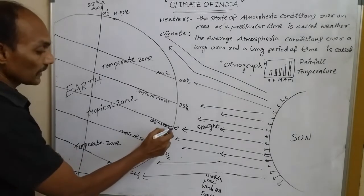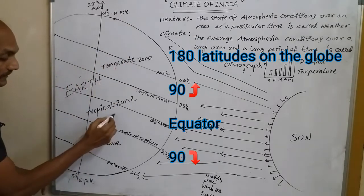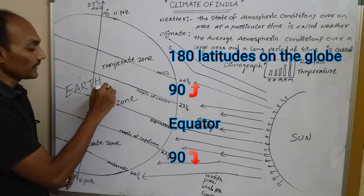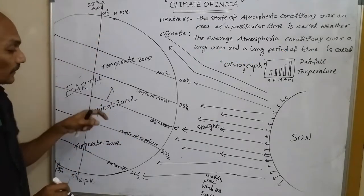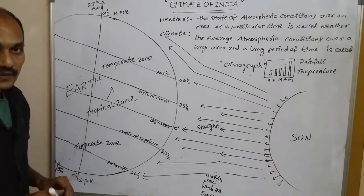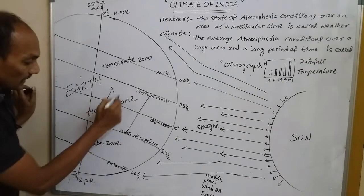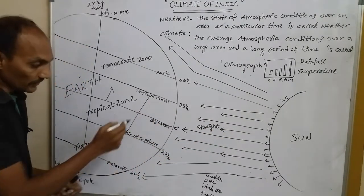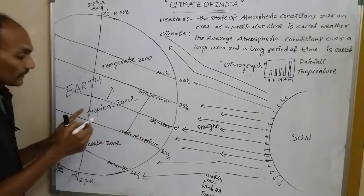Zero degrees latitude is the longest latitude on earth — this is the equator, dividing the northern and southern hemispheres. If we move away from the equator towards the poles, the temperature will automatically decrease. The highest temperature is seen in the tropical zone, which is close to the sun and receives the most heat from sunlight.